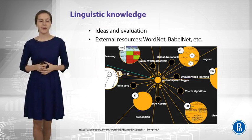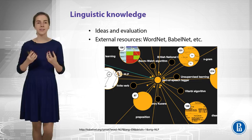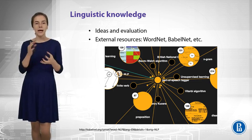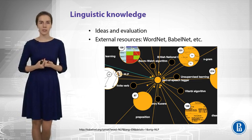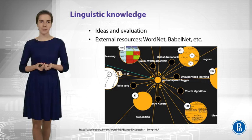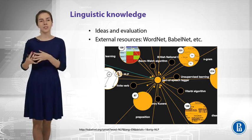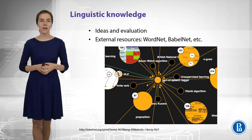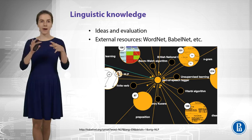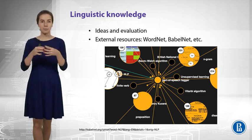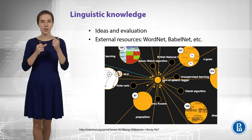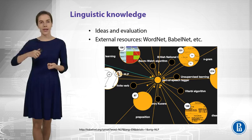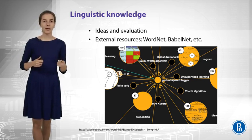Another thing which also comes from the linguistic part of our area is different types of relations between words. Linguists know really a lot about what those types could be, and this knowledge can be found in some extrinsic resources. For example, WordNet is a resource that tells you there are hierarchical relationships — like, we have some fruits and then some particular types of fruits like peach, apple, orange, and so on. This relation would be called hyponym and hyperonym.